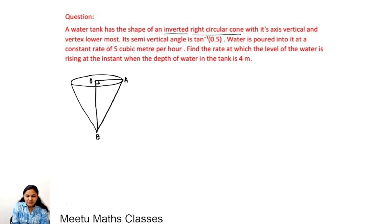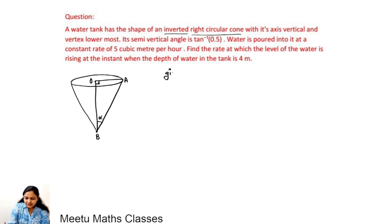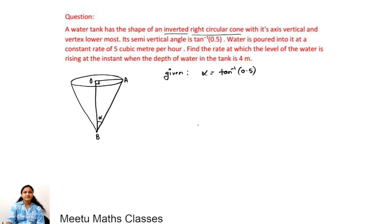Triangle OAB is a right-angle triangle. Its semi-vertical angle is tan⁻¹(0.5). Let us take the semi-vertical angle as alpha, so alpha = tan⁻¹(0.5). The water is poured into the tank at a constant rate of 5 cubic meters per hour.